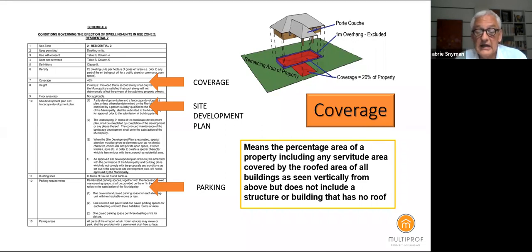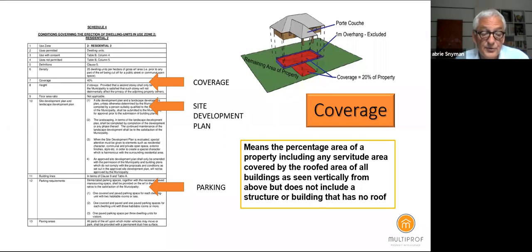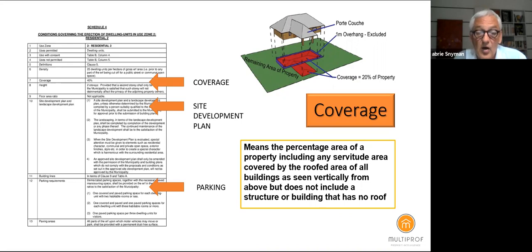Coverage is a very important issue in complexes. It simply means the percentage area of a property, including servitudes, covered by roofed areas — looking at it vertically from the top. The only exclusion is roof overhangs. So if you have a property of 10,000 square meters and coverage is 40%, you are allowed roofed areas of 4,000 square meters.